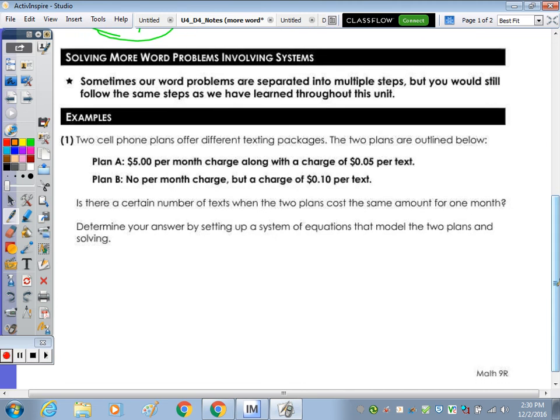In continuing to solve more word problems today, it says sometimes our word problems are separated into multiple steps, which is what you would see on a regents on a short answer question. You would still follow the same steps, so we always read it carefully, translate, write our let statements, solve it, and then check to make sure it makes sense. Number one, we have two cell phone plans, and they offer different texting packages. The two plans are outlined below, so we have plan A and plan B. Take a minute with the person next to you to come up with your two let statements.